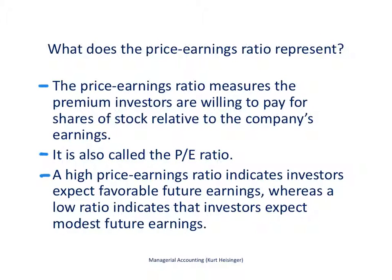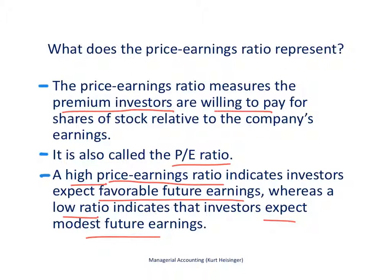The price earnings ratio tells us the premium that investors are willing to pay for the shares of stock for that company, related to that company's earnings. It's also called the PE ratio. A high PE ratio would indicate that investors expect high future earnings growth — so if they're looking at a company that's a high growth company with lots of earnings potential in the future, we're likely to see a high price earnings ratio because the company hasn't yet achieved that earnings potential. A low PE ratio indicates that investors would expect moderate future earnings. If we're seeing a seasoned company that perhaps doesn't have a whole lot of earnings potential, then we're going to see a lower price earnings ratio.